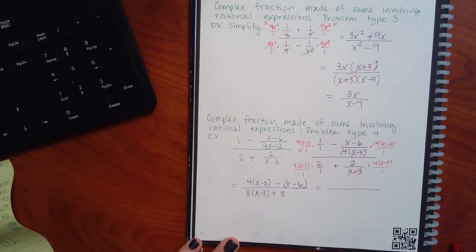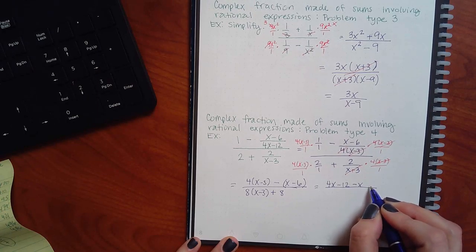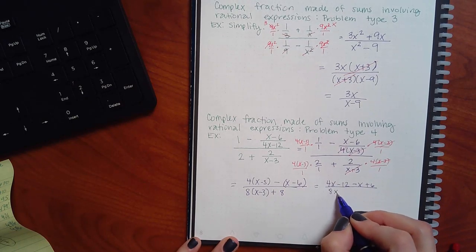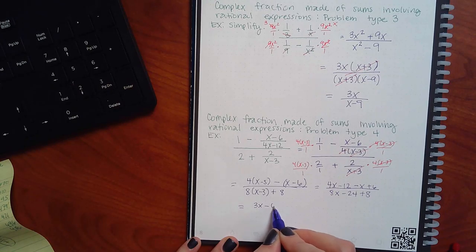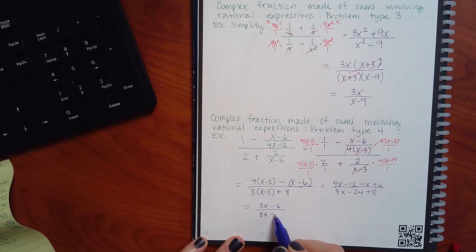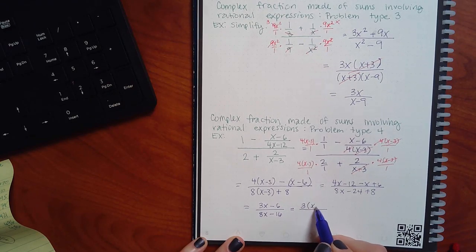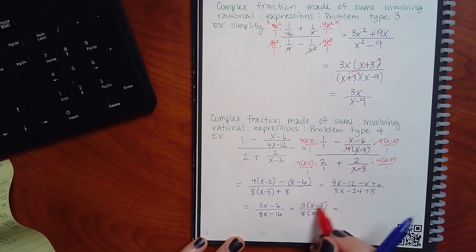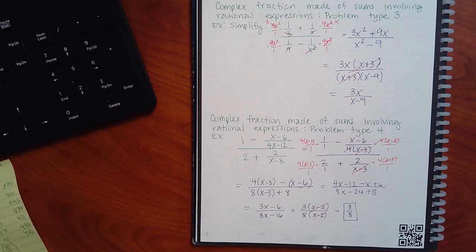So, that's three x minus six. Hold on. Three x minus six. And then, you're going to have eight x minus sixteen. Can you factor those? Yeah. So, you're going to say three and then x minus two. And then, you're going to say eight and x minus two. Cancel the x minus two. You're going to have three eighths. You got it. That was a big one, right? A lot of stuff going on.